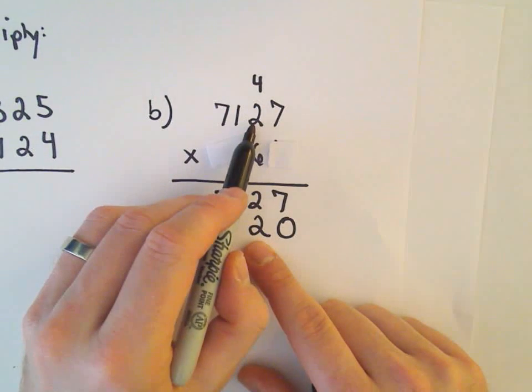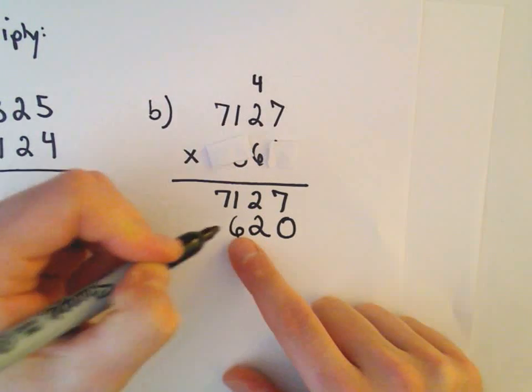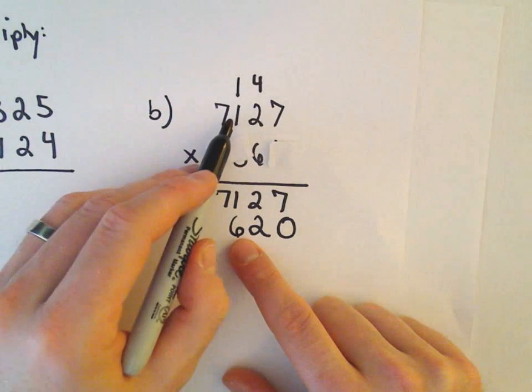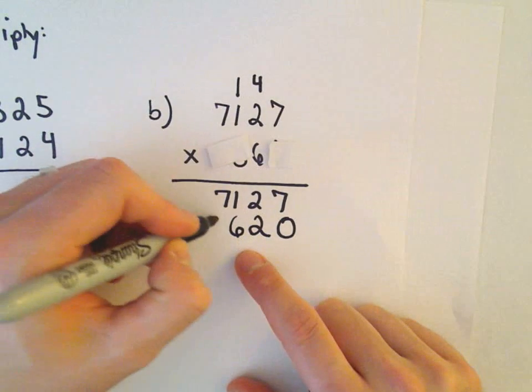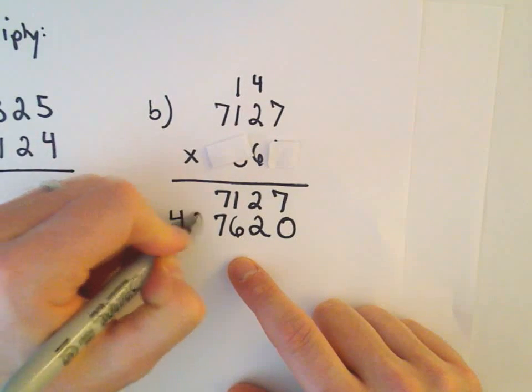6 times 2 is 12. 12 plus 4 is going to be 16, so I'm going to keep the 6 and carry the 1. 6 times 1 is 6, plus 1 is 7. And then 6 times 7 is going to be 42.